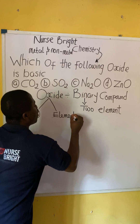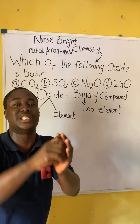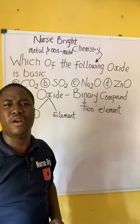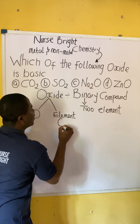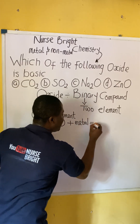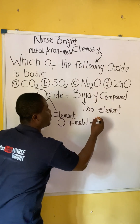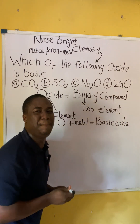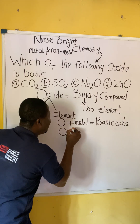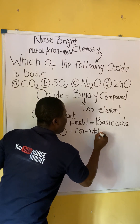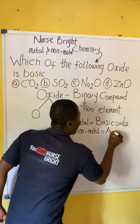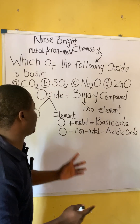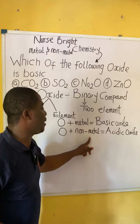It is that element attached to oxygen that tells us the type of oxide. When oxygen combines with metals, they form basic oxides. But when oxygen and non-metals combine, they form a type of oxide called acidic oxides. So: oxygen combined with a metal forms a basic oxide; oxygen combined with a non-metal forms an acidic oxide.